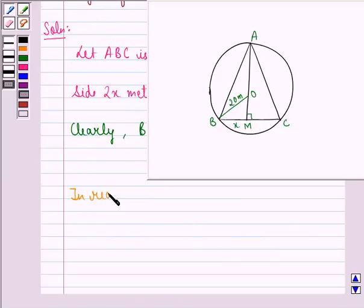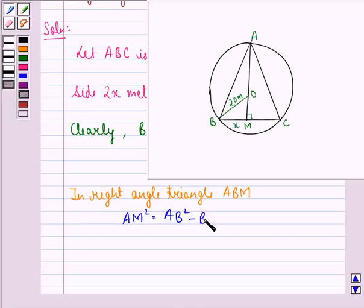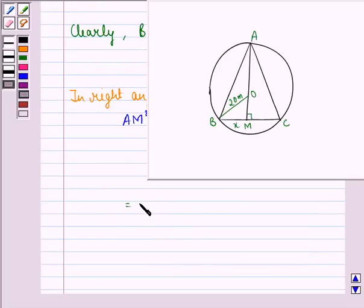Now, in right angle triangle ABM, we have AM square is equal to AB square minus BM square and this we get by Pythagoras theorem. We can write this as 2x, the whole square minus x square because AB is equal to 2x and BM is equal to x.